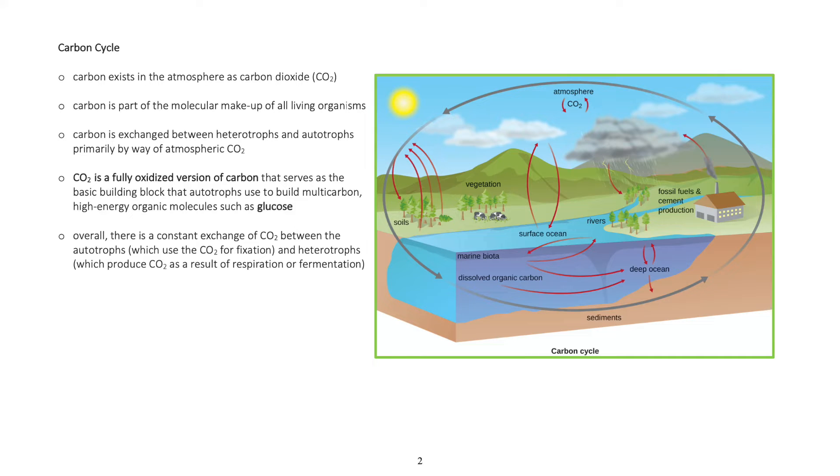Carbon dioxide is a fully oxidized version of carbon that serves as the basic building block that autotrophs use to build multi-carbon, high-energy organic molecules such as glucose.